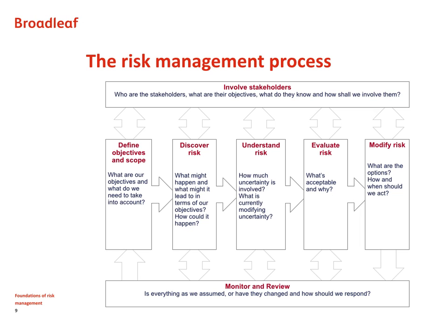At this stage we also structure the rest of the process so that any risk assessment is comprehensive. Then we can move on to actually discover risks — we can identify them through a systematic method in terms of what could happen and what would be the effect in terms of our objectives. We need to understand that risk in more detail by looking at the range of consequences and likelihoods and the effectiveness of the existing controls. From that we can draw conclusions on whether the current level of risk is acceptable, and if not what further actions are justified.